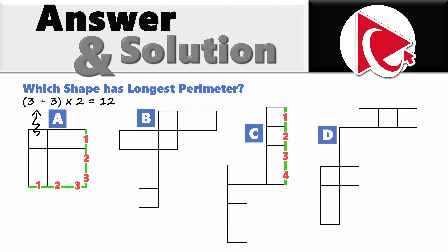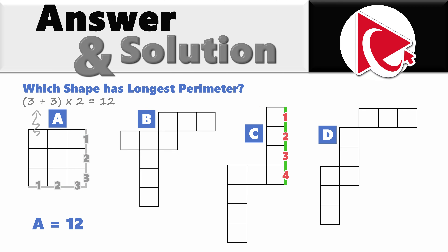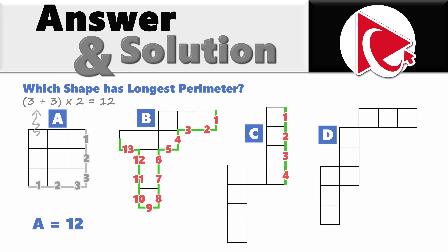To calculate the perimeter of shape A, we sum up both of its sides and multiply by two: (3 + 3) × 2 = 12. So the perimeter of shape A is 12 units. Now let's look at shape B — we need to manually count the boundary squares: one, two, three, four, five, six, seven, eight, nine, ten, eleven, twelve, thirteen, fourteen, fifteen, sixteen, seventeen, nineteen, and twenty. So the perimeter for shape B consists of 20 units.